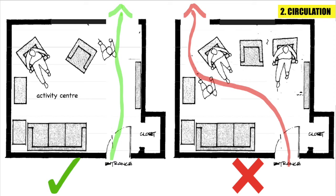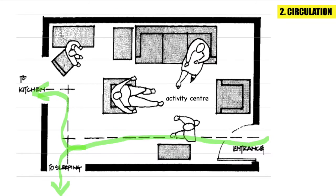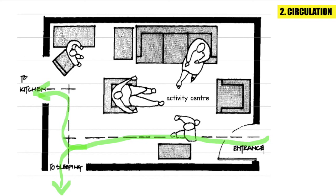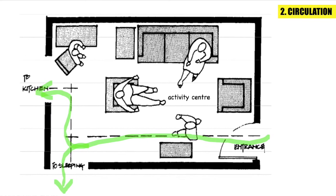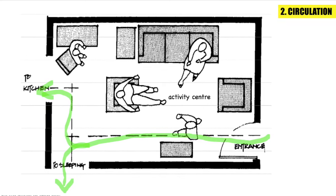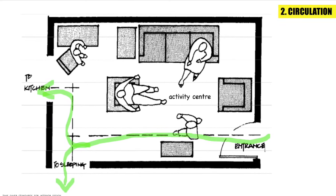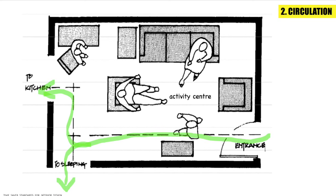Traffic in the living room is caused by the interference of furniture. This can be avoided with good circulation. When through traffic is unavoidable, pathways should go round the conversational or activity centers.